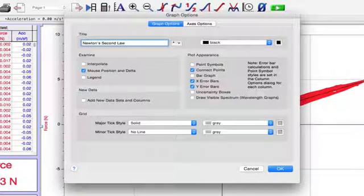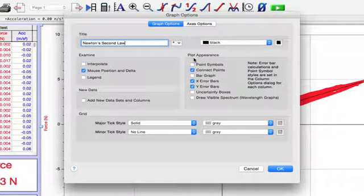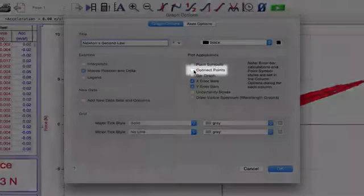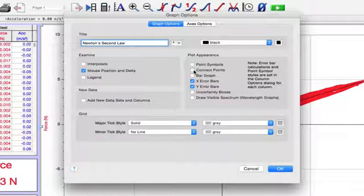By default, Logger Pro connects one data point to the next. If you'd like to turn that option off, uncheck this box here. For this force versus acceleration graph, it makes more sense not to connect the data points.